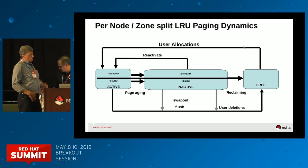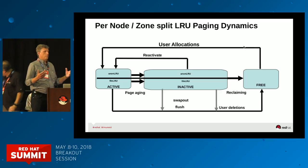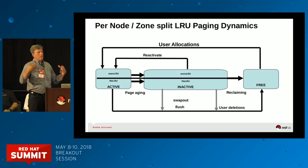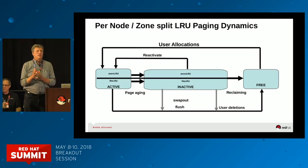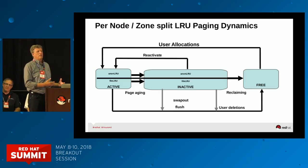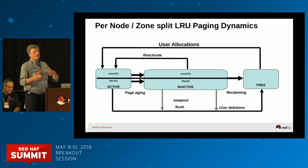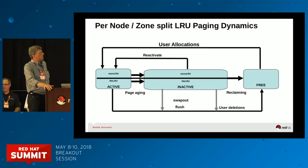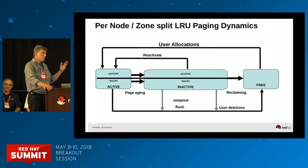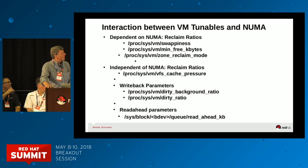Each NUMA node has its own kswapd. They all run in unison on each node. It's possible to get into a situation where you get memory reclamation, swapping, and page cache reclaiming on one node but not another. So if you run vmstat, it's possible to see a large amount of free memory yet the system is swapping or reclaiming memory at the same time. This causes a performance degradation and there are ways to tune around that.